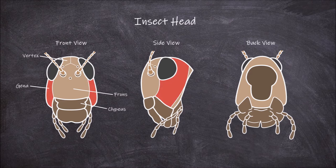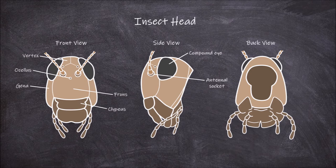Also present on the head are a pair of compound eyes and sockets for a pair of antennae. In addition, one or more ocelli are found on the head. These are light-sensitive simple eyes which are often arranged in a triangle on the front of the head.